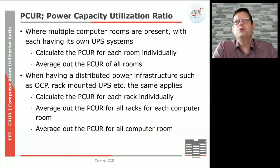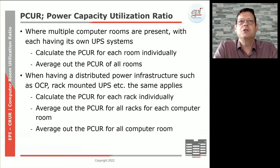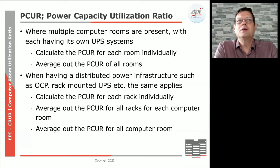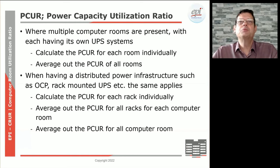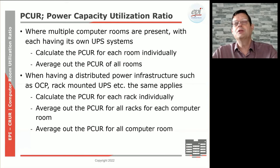If you have power distribution in a different way — for example, where the customer adds extra UPS capacity in the racks — that should be added to the calculation. If you're using OCP, you might not have a traditional UPS at all, because in an OCP environment, the power conversion and battery backup is installed in the rack itself, so you need to take that into account. For multiple computer rooms all connected to one UPS, just take that one UPS. If you have shared UPS, average it out and take the number from there.